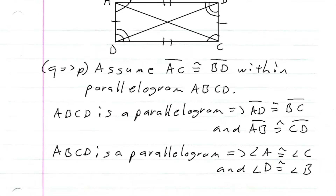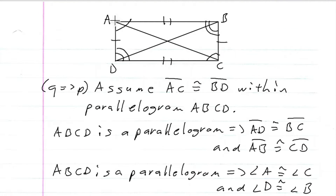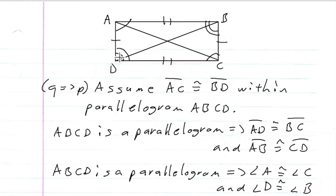Our strategy here is to look at triangle ADC and triangle BCD. We know these two triangles are congruent by side-side-side. And since these two triangles are congruent, their corresponding angles are congruent — namely angle D is congruent to angle C. And if D is congruent to C, that means B is congruent to D, which is congruent to C, which is congruent to A, meaning all of these angles are congruent. We know the sum of all these angles must be 360, and if they're all the same, that means all of them must be 90, and that means we are dealing with a rectangle.